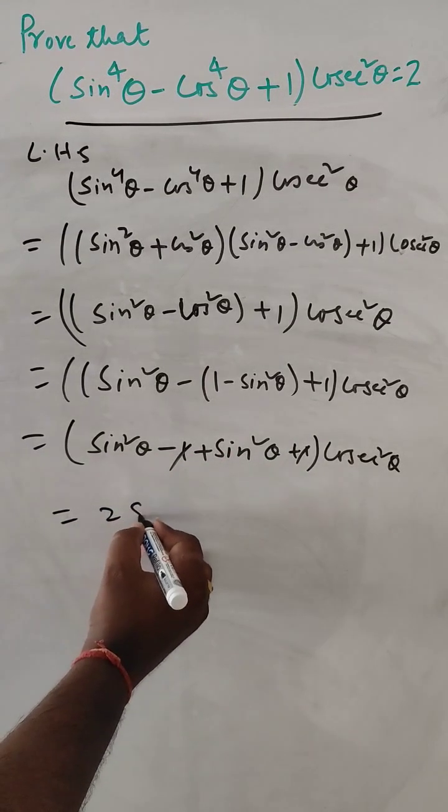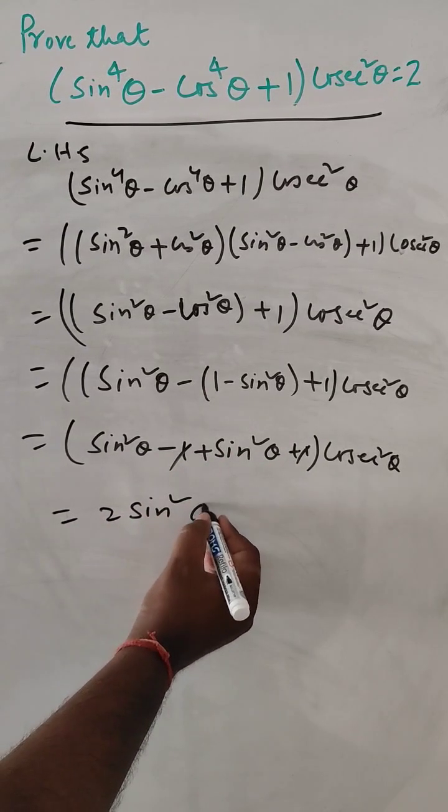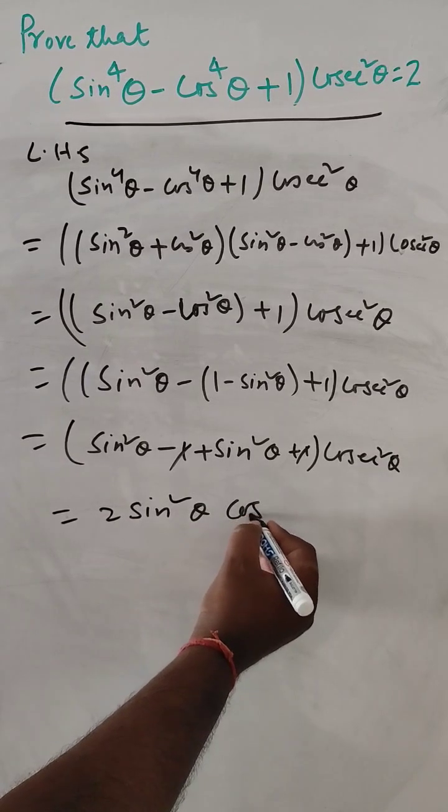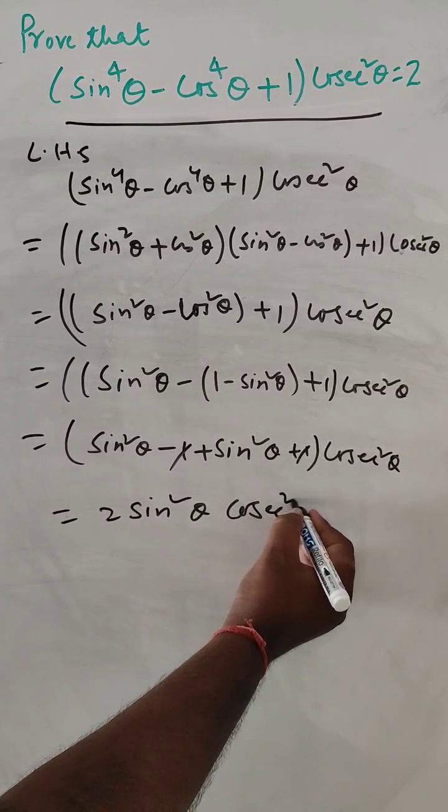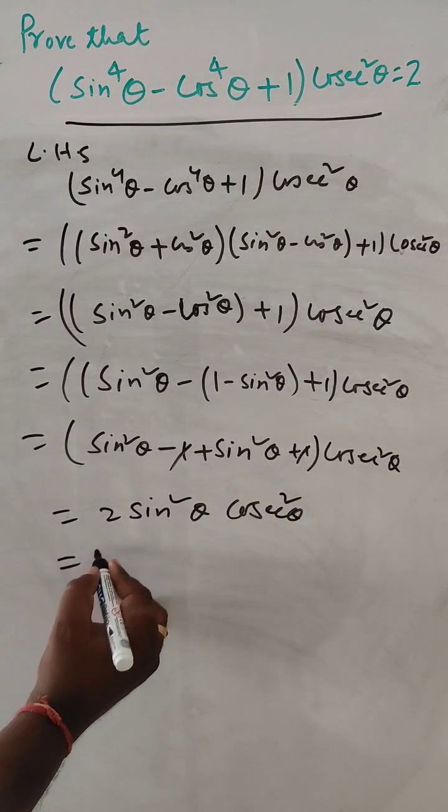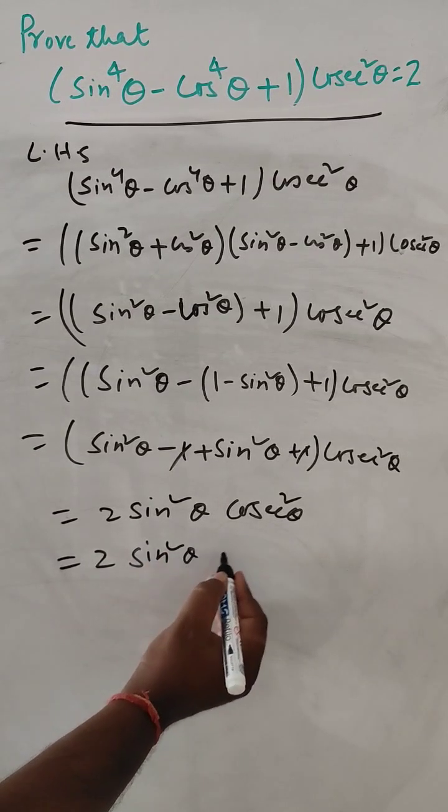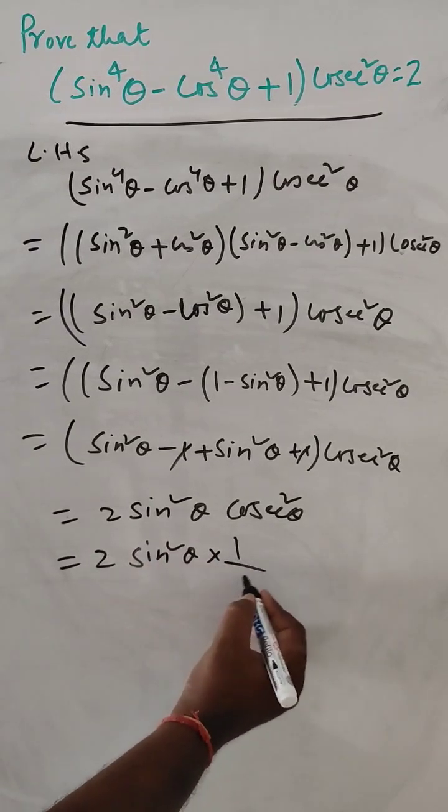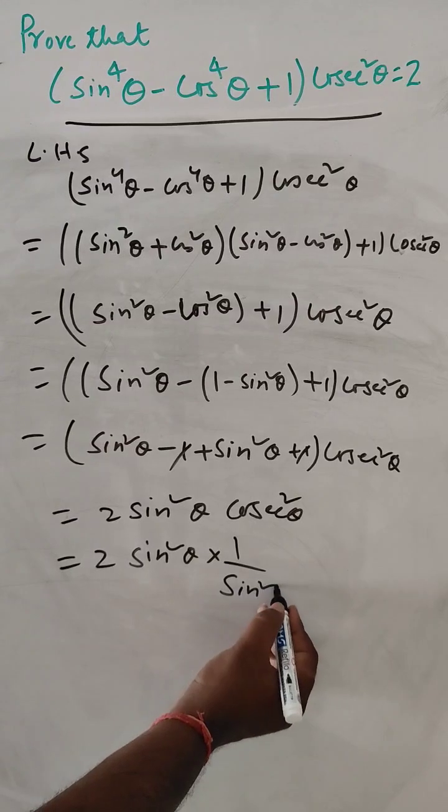This is 2 sin square theta into cos square theta. So 2 sin square theta, this can be 1 by sin square theta.